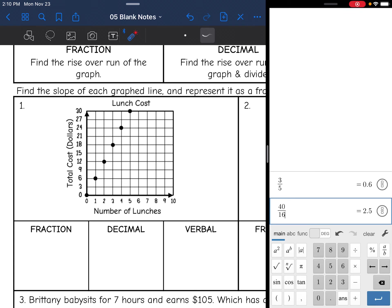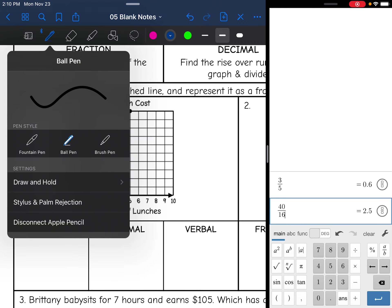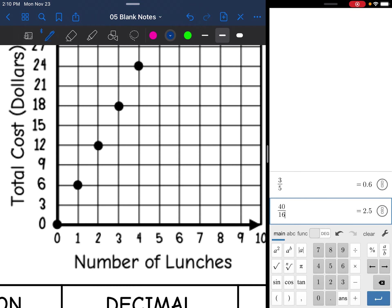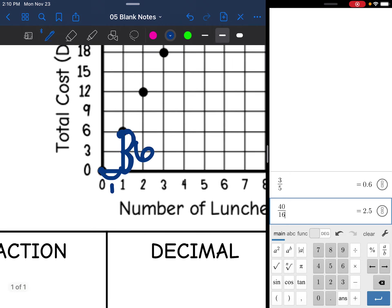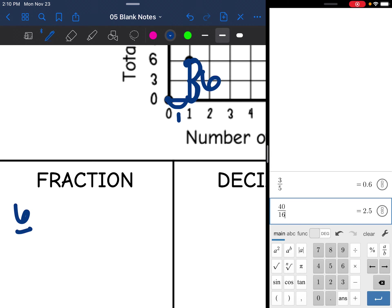This graph is representing the number of lunches and the total cost. Let's just start by doing the fraction, the rise per run part. I'm just going to use these two points right here. There's my slope triangle. I can tell on the rise that I go from 0 to 6. Remember, my y-axis is counting by threes, so that is 3, 6. And then the run is just 1. So the fraction here would be 6 over 1, which simplifies to 6.